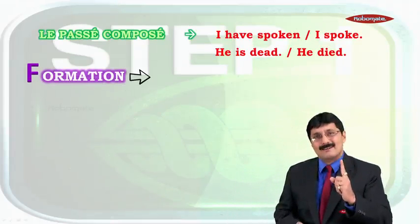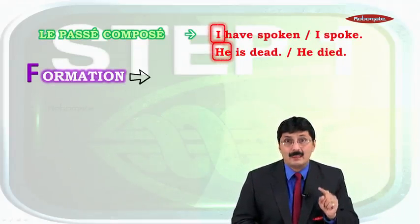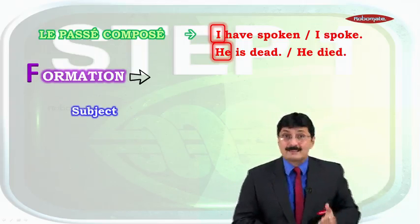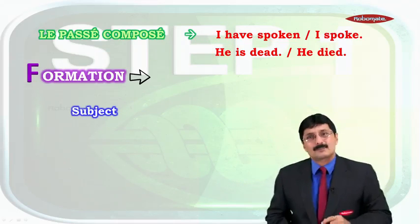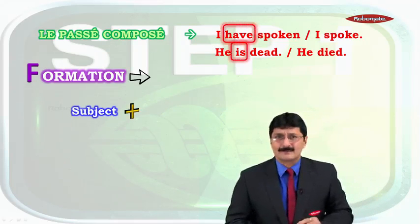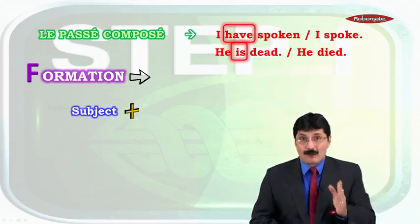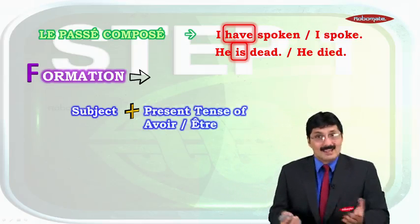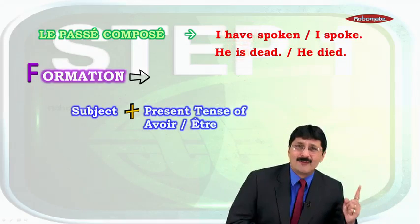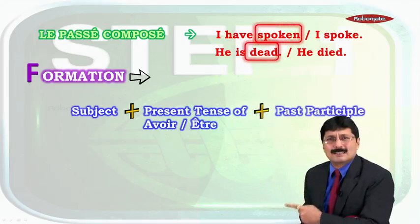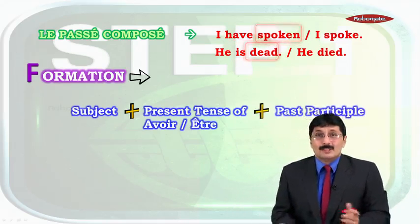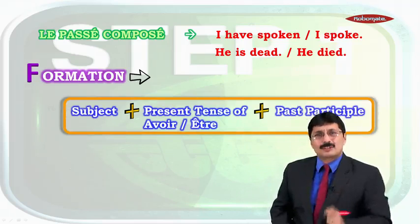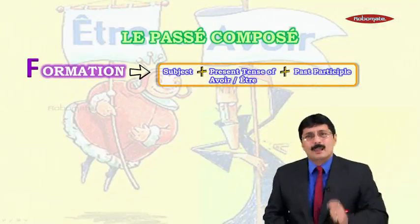Let's have a look at Step 1: Formation. Look at 'I' and 'he' — the subject is the noun or pronoun before the verb in an assertive sentence, and you can ask 'who' or 'what' to the verb. 'Have' is present tense of either the verb 'to have' (avoir) or the verb 'to be' (être). And 'spoken' and 'dead' are past participles. So the formation is: Subject + present tense conjugation of avoir or être + past participle of the given verb.